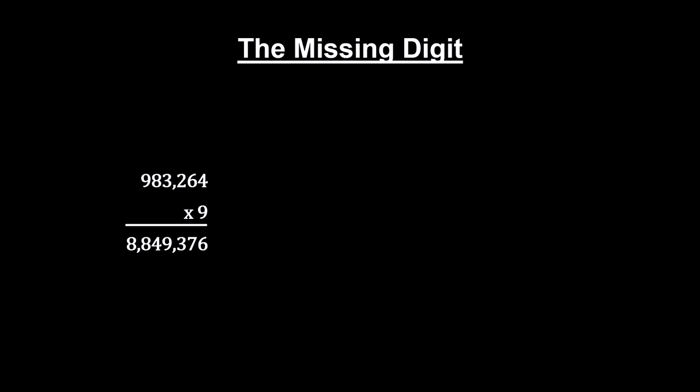Multiply nine times any number, say 983,264. Pick one of the digits in the product. We'll pick the number seven. Now add up the remaining digits. If the answer has more than one digit, add them. Repeat the process until you get down to a single digit. Subtract that digit from nine, and you get the number you picked out of the original product. This will work no matter which digit you choose to remove from the product.